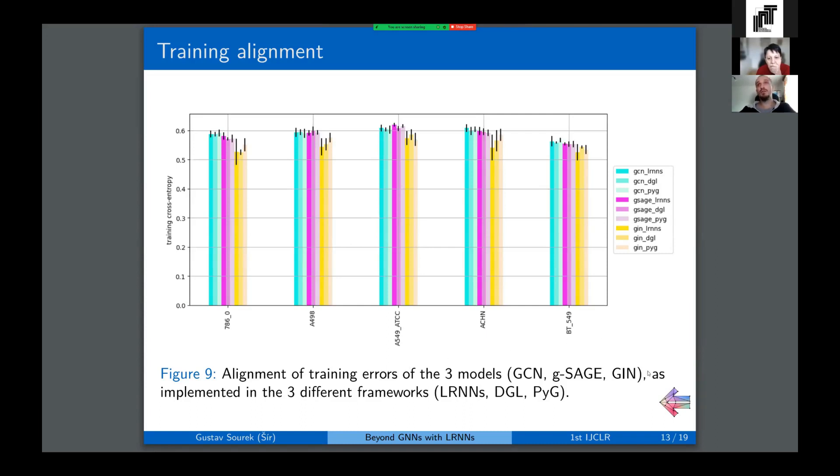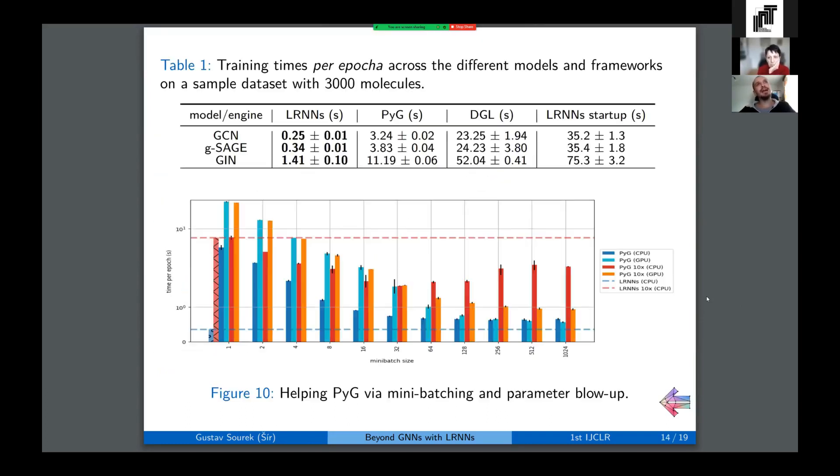This is a comparison of our framework against two most popular frameworks designed specifically for graph neural networks: PyTorch Geometric and Deep Graph Library. We evaluated through three selected perhaps most popular graph neural network models: graph convolutional nets, GraphSAGE, and graph isomorphism networks to validate that we obtained the same training performances as these other frameworks. And also to our own surprise, we demonstrated that we can do it actually faster for these classic graph neural network models as compared against these state-of-the-art graph neural network frameworks. This includes the startup overhead of our framework, which is basically this computation of the least Herbrand model. And it also applies to cases where we apply batching and GPU speedup in the other frameworks.